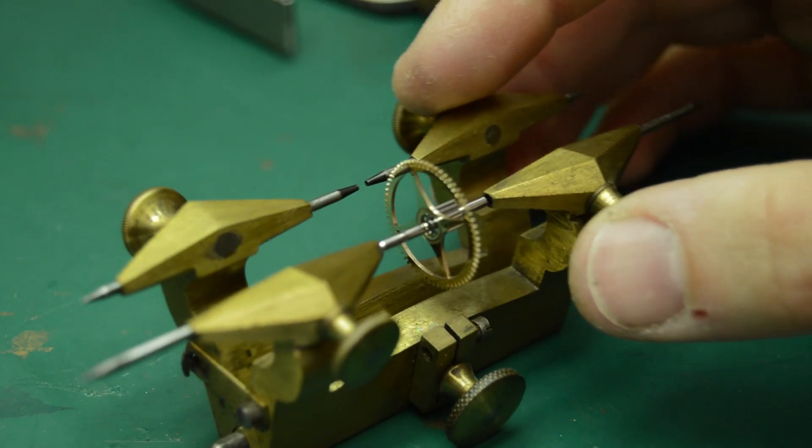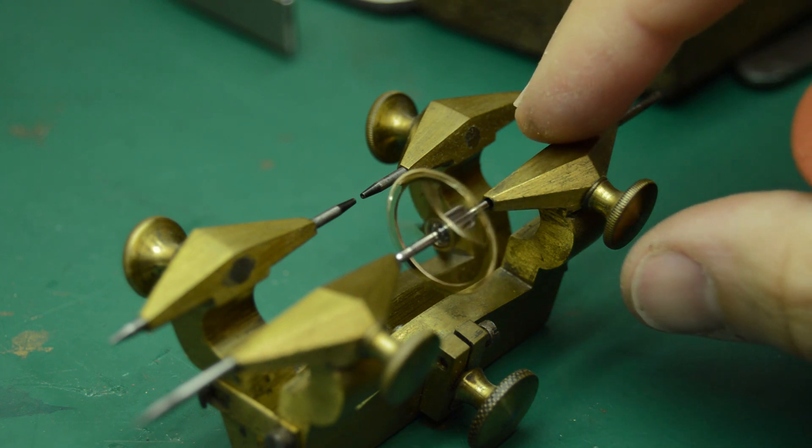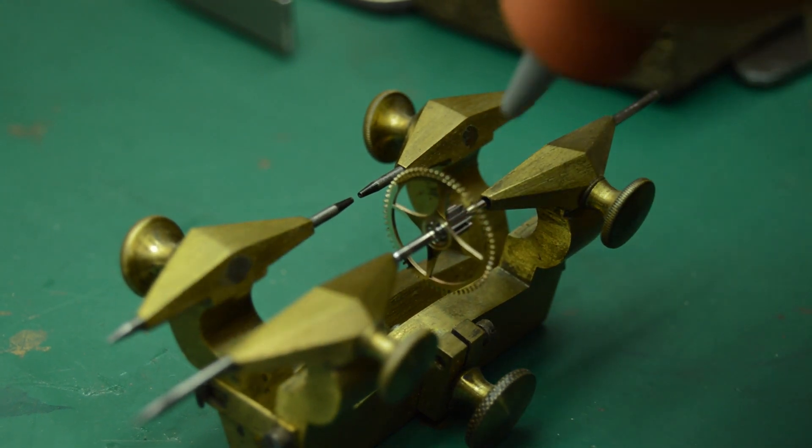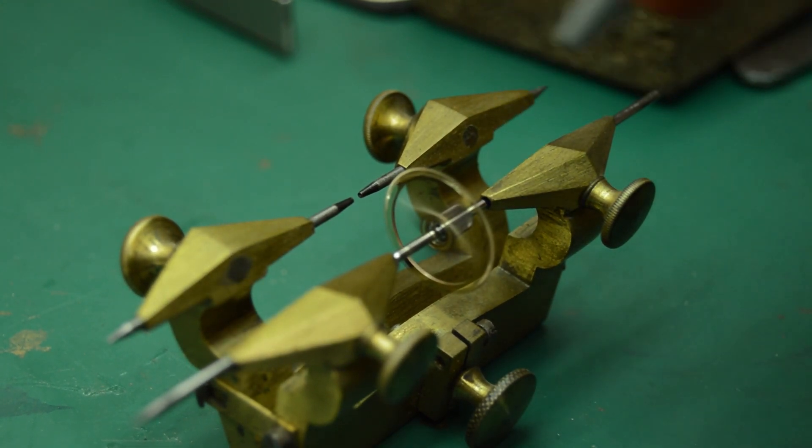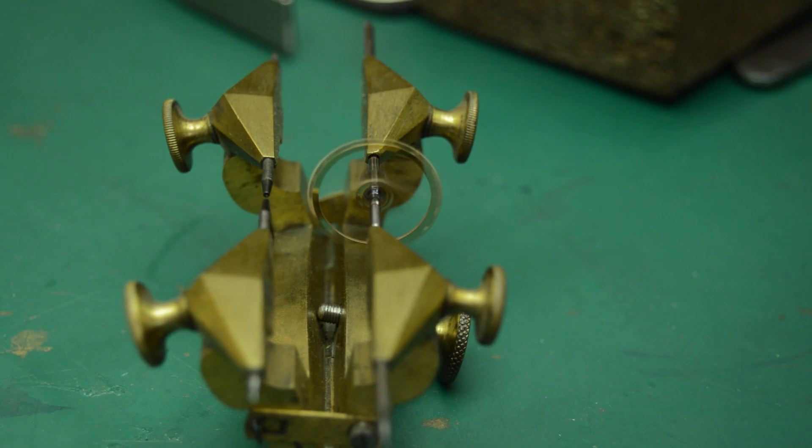It's pretty concentric. You don't need to worry about it side to side at the moment because I haven't actually driven it all the way onto the arbor yet. So it's not going to be flat. But what I'm worried about is it being concentric. And it looks pretty good to me.